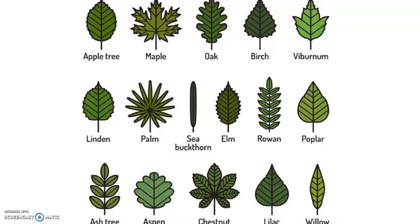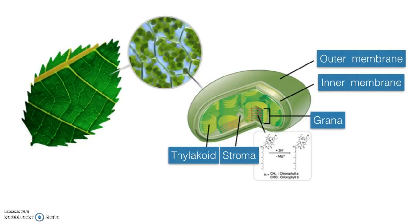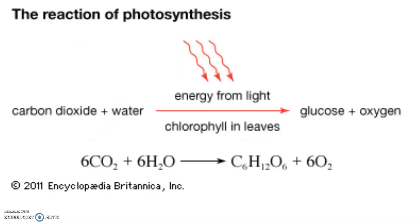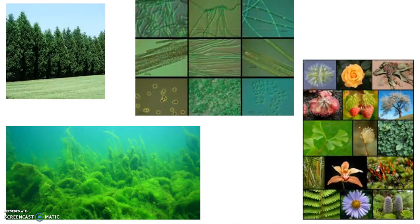Photosynthesis is a reaction in leaves. Chlorophyll in a chloroplast is a pigment that's green. CO2 and water react with light to make sugar that's sweet. Oxygen is a waste product but we use it to breathe. But don't forget that photosynthesis is not restricted to trees.